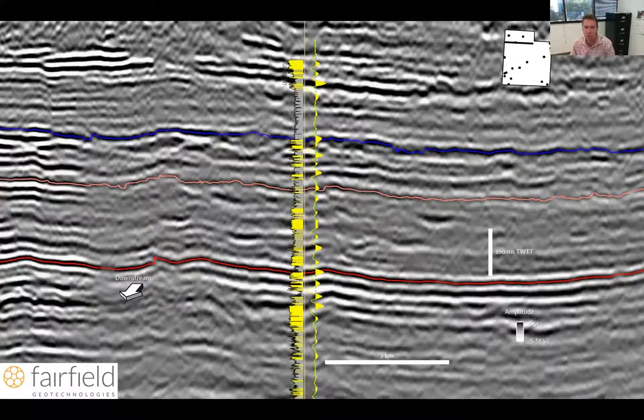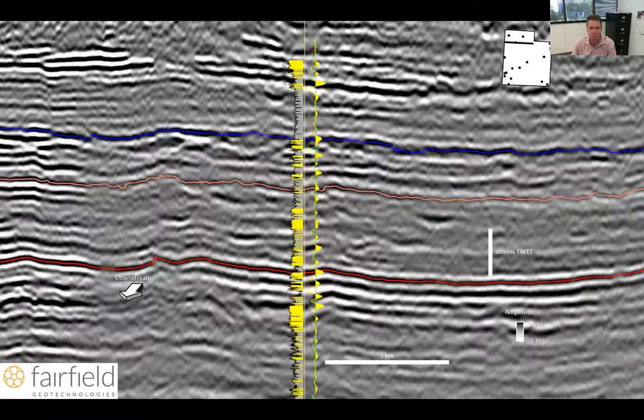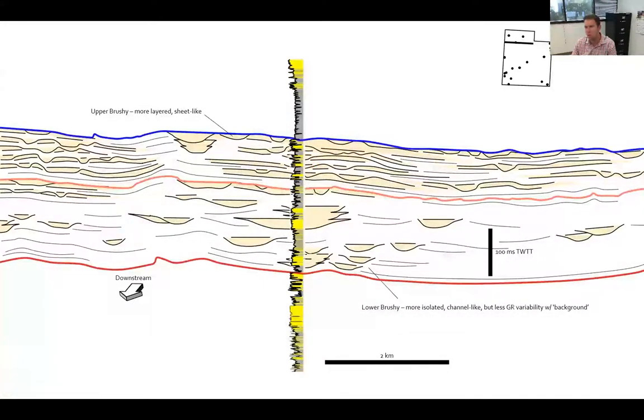So now we're a bit more proximal to the north and zoomed into the Brushy. There's a new horizon that's pink, which is a regionally mappable horizon separating upper and lower sections of the Brushy. There's also a slightly different seismic character that's separated from the upper and lower Brushy, as well as a slightly different wireline log character. In the middle of the screen is a gamma ray log showing a blockier, thicker, low gamma ray response of the lower Brushy compared to rattier, thinner, more layered gamma ray responses of the upper Brushy. Correspondingly, the seismic reflection character in the upper is a little bit more continuous, a little more high amplitude, and then it's a lot more isolated and discontinuous high amplitude in the lower Brushy.